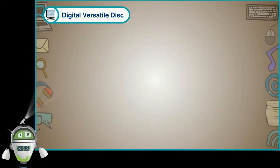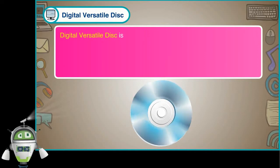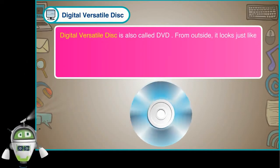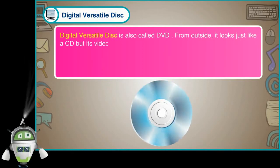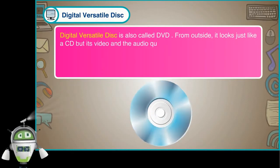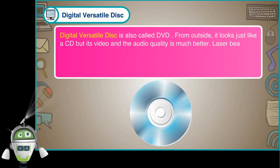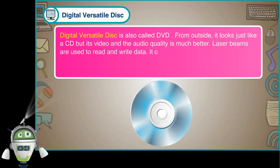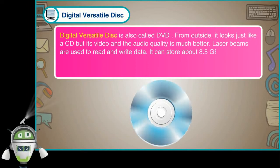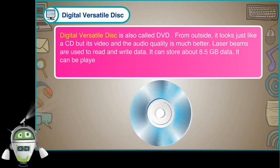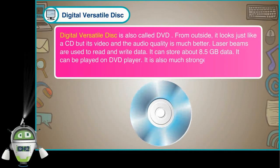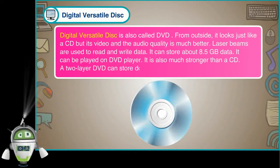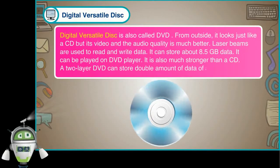Digital Versatile Disk, also called DVD, looks just like a CD from the outside, but its video and audio quality is much better. Laser beams are used to read and write data. It can store about 8.5 GB of data. It can be played on a DVD player and is also much stronger than a CD. A two-layer DVD can store double the amount of data of a standard DVD.